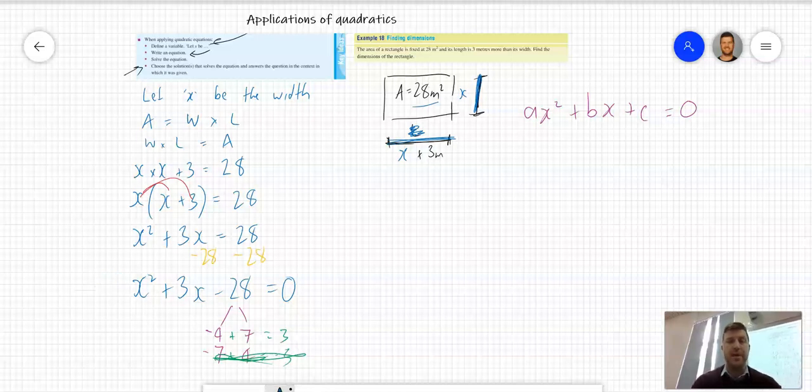The two numbers to factorize this equation: (x + 7)(x - 4).